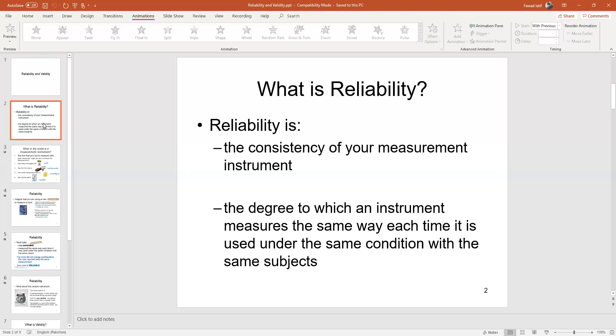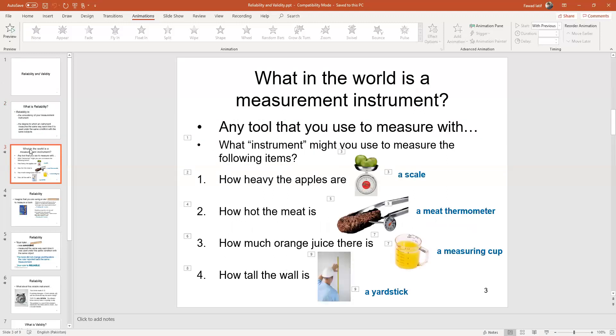So this is what reliability means when conducting survey-based research. However, let's simplify it. For instance, if you've got a scale and you put some apples on it and they measure one kg, after some time you put the apples back on the scale again, they should still measure the same - one kg - because the apples haven't changed and the scale hasn't changed.